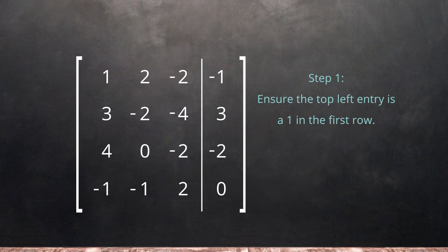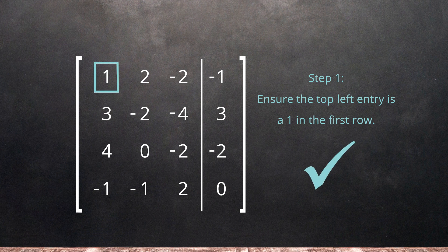First, we will ensure the top left entry is a 1 in the first row. If it isn't, we can divide the first row or swap with another row that has a 1 in the first column.